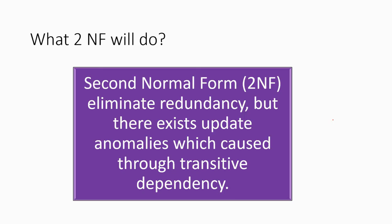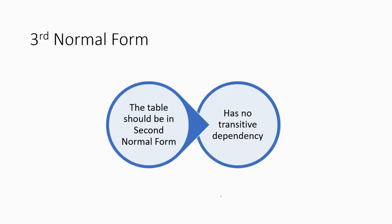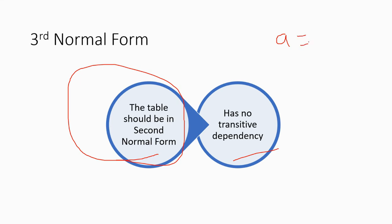In second normal form we eliminate redundancy, but transitive dependency may still exist. For that we move to the third normal form. To recap: first normal form requires atomic values and a key; second normal form requires 1NF and no partial dependency; third normal form requires 2NF and no transitive dependency. The transitive rule means: if A determines B and B determines C, then A determines C.